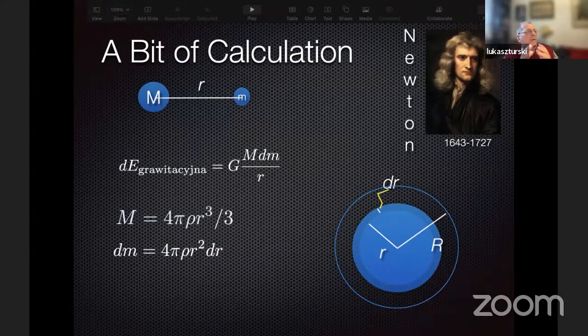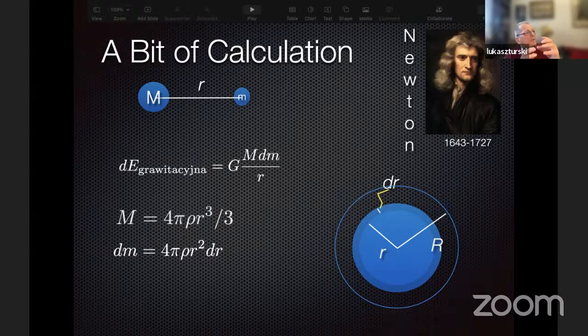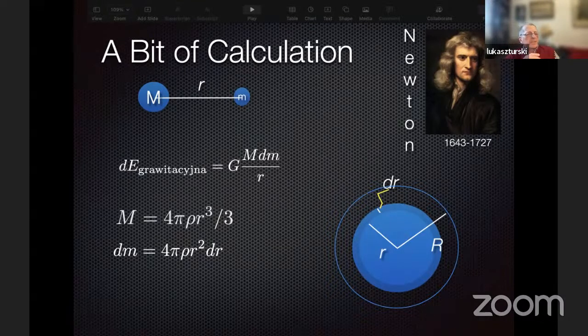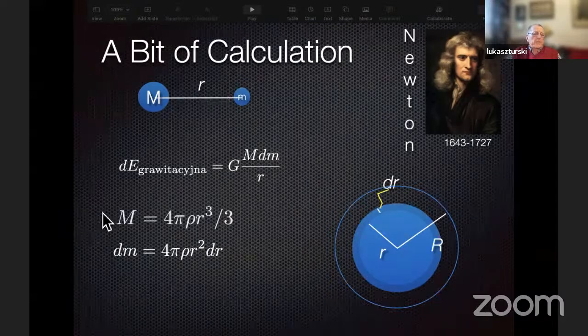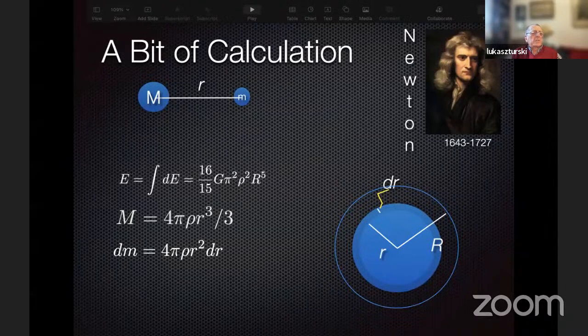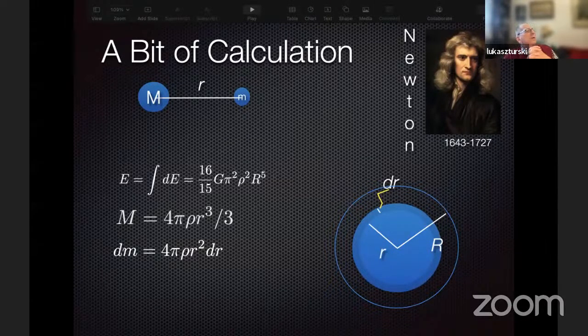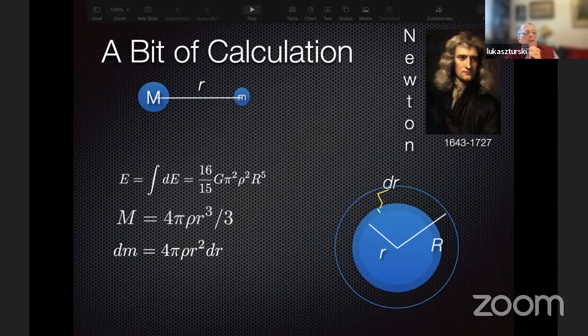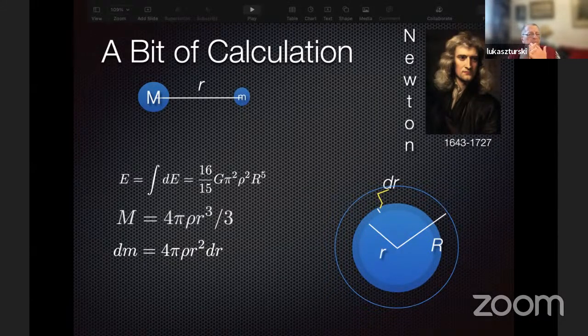The change of the mass of the layer of thickness dr, when we increase the radius of the planet by dr, is delta m. Therefore, plugging it into this expression, I can calculate the total gravitation energy which is stored in a planet.